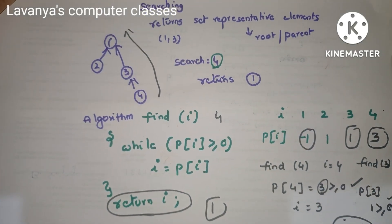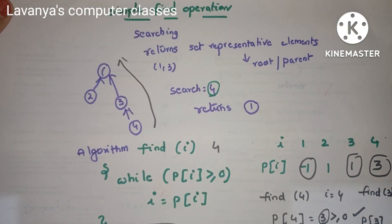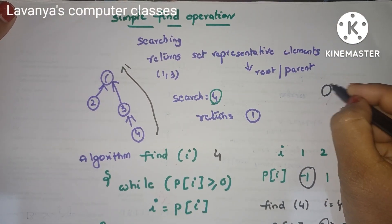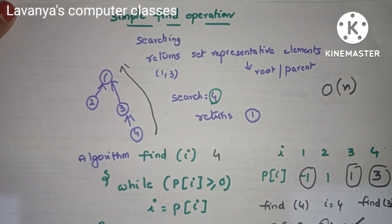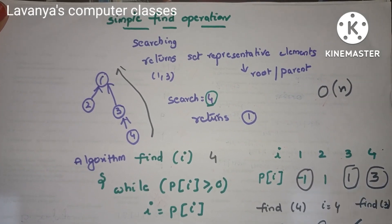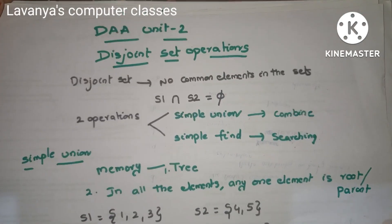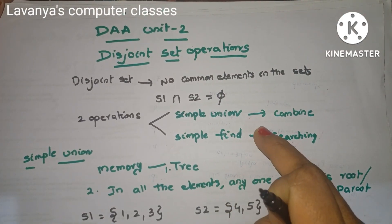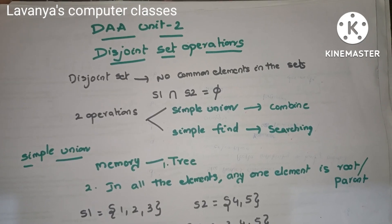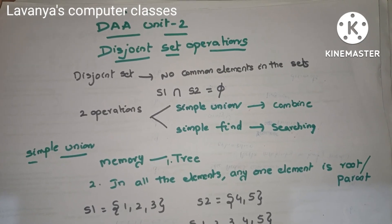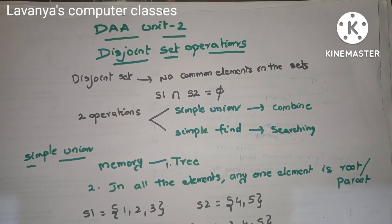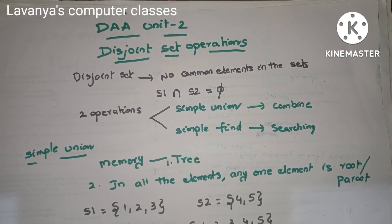This is how we find an element in the group — this is called the Simple Find operation. The time complexity of the Find operation is O(N). That covers disjoint sets and the two disjoint set operations: Simple Find and Simple Union. Thank you for watching. If you like this video, please subscribe to the channel and share it with your friends. Complete notes for Unit 2 are available in the description box.